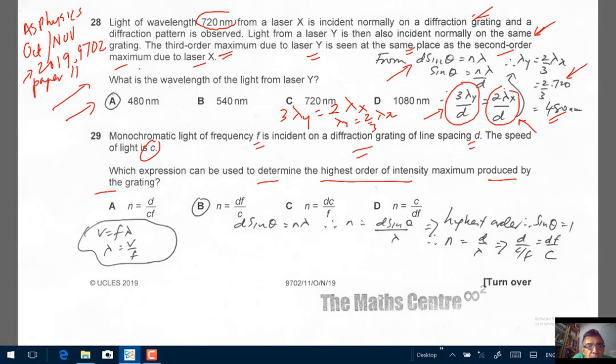So this is a pretty easy one. No tricks. We are using d sine theta equals to n lambda. So we are trying to find the highest order of intensity maximum. So we can make n the subject of the formula. Because we are looking at highest order of intensity, so sine theta must be 1. So n will be, sine theta is 1. We are looking at theta equals to 90 degrees. So n will be d over lambda.